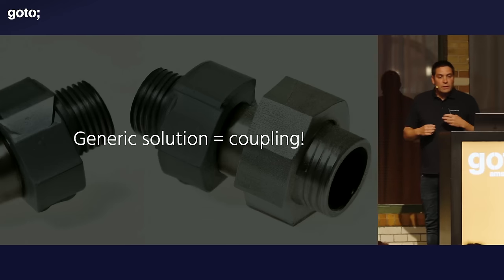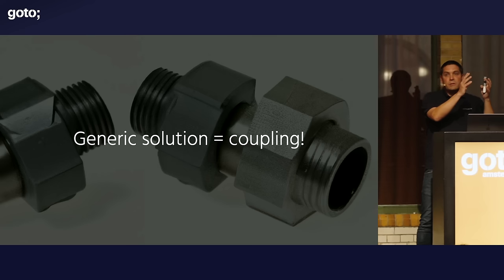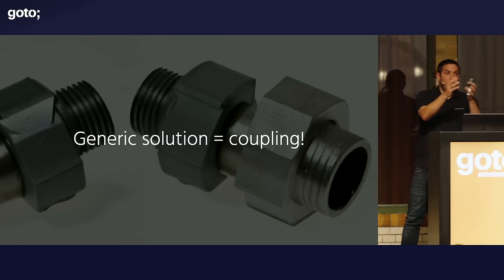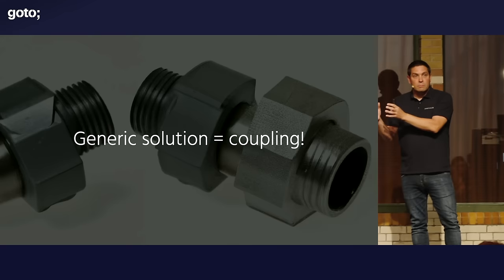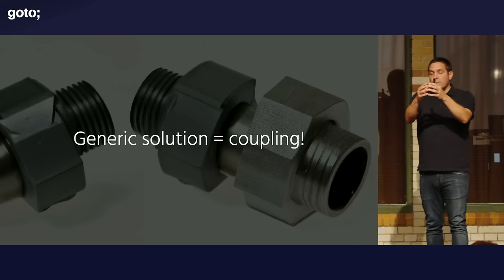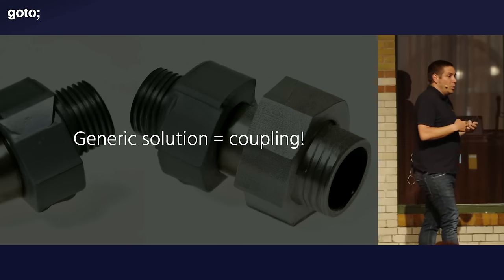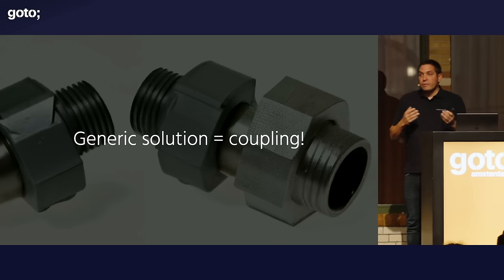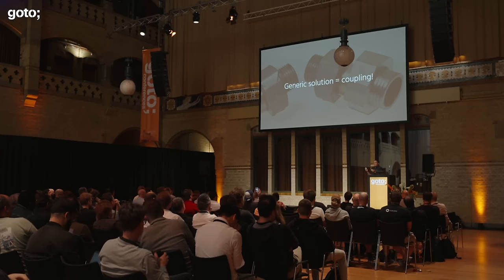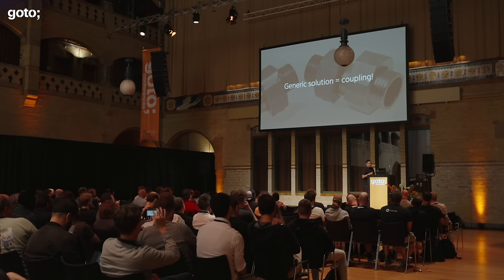If you introduce a generic solution, you're also introducing coupling. If you have a piece of code in one place and need it somewhere else — if you copy-paste it to another place, is there coupling? No, they're still independent. But if you extract it into a generic library and make two places depend on that library, you have coupling. Coupling is not necessarily bad — every non-trivial system needs some form of coupling. You can only write a simple 'hello world' with no coupling. But you need to be aware that making stuff generic increases coupling between those components.